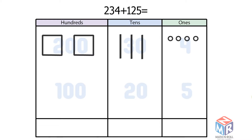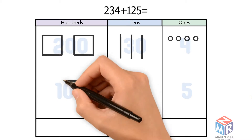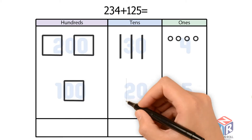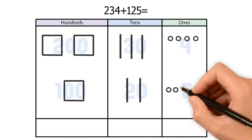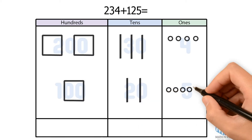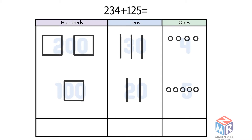125 has 100, so we draw 1 square. 2 tens, so 2 bars. And 5 ones, so 5 circles.